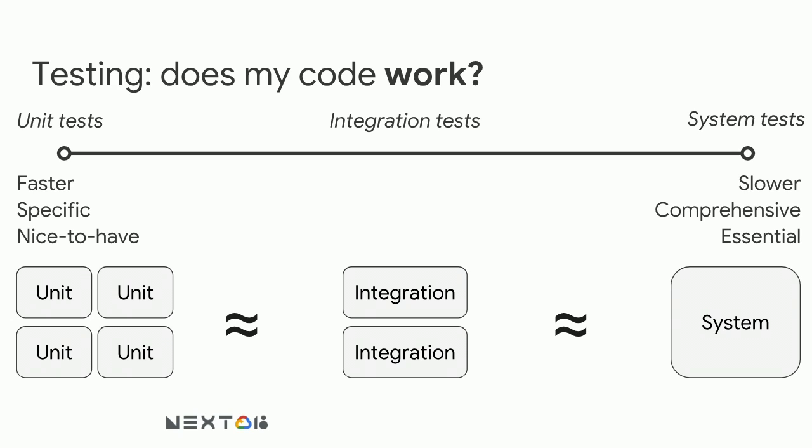System tests are typically more essential for determining whether or not your code works at all. As a rough indication of how many tests you need — imagine you have a feature tested by one system test. To cover that feature completely with integration tests, you might need two integration tests, or perhaps up to four unit tests. Note that these ratios are not exact; they are simply an example.